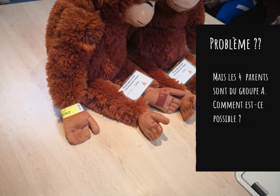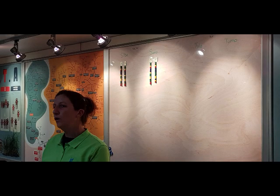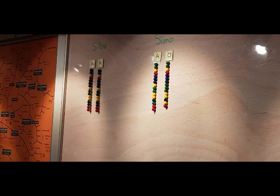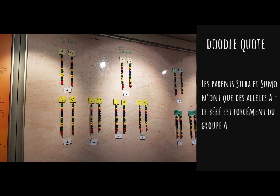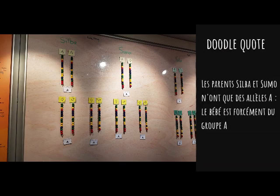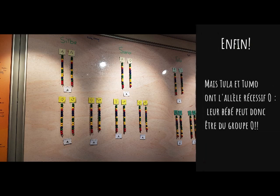Le groupe sanguin d'un enfant est fonction de celui de ses parents. Il est en effet défini par rapport au groupe de ses parents, lequel se base sur deux allèles. Chaque individu reçoit deux allèles : A, B, O, O. Les allèles A et B sont dominants et l'allèle O est récessif. Ce dernier ne peut s'exprimer qu'en présence d'une seconde allèle O.